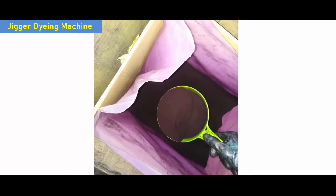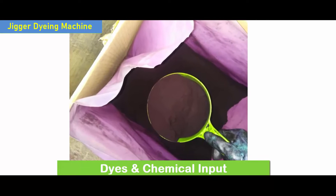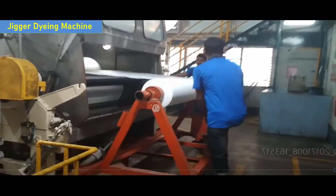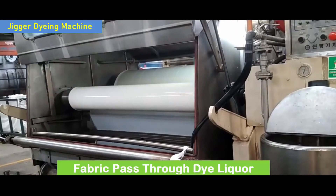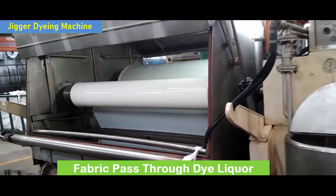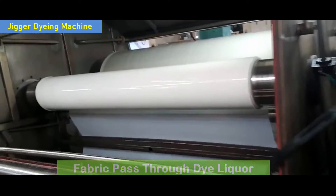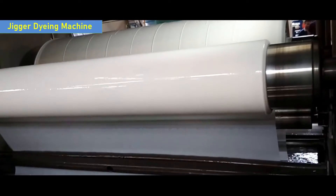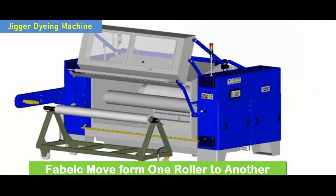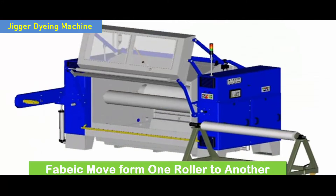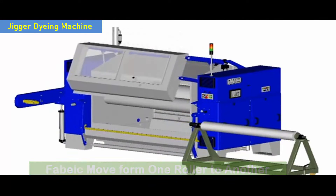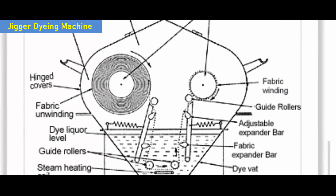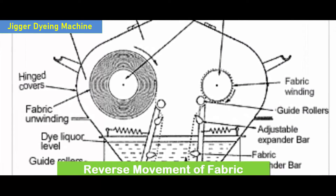The squaring, bleaching, and dye solution is filled in the dye bath. The fabric passes through the medium of chemical solution at the bottom of the machine from one roller to another roller. When all the fabric from one roller has passed through the dye bath and the fabric gets transferred on the other roller, the moving direction of the fabric is reversed.